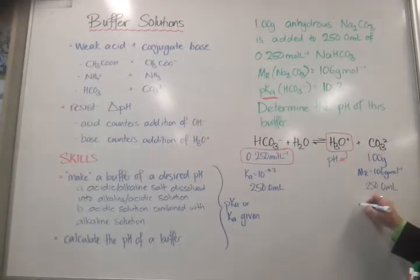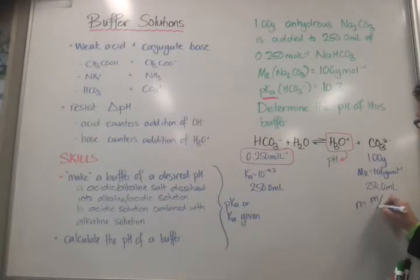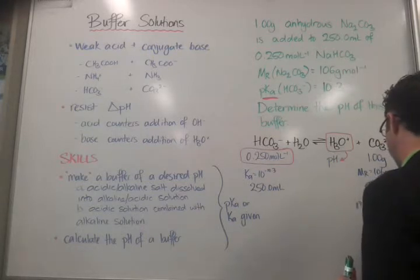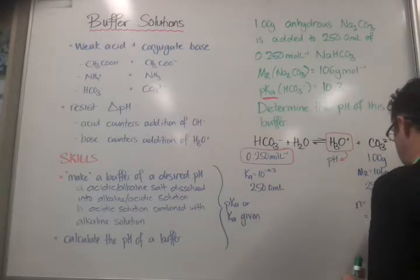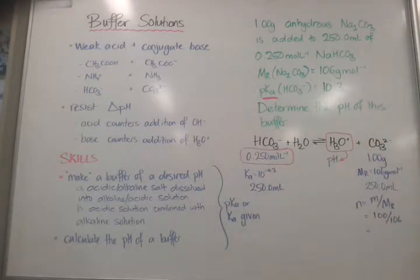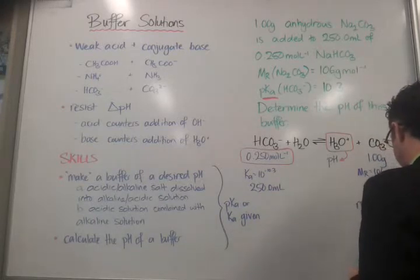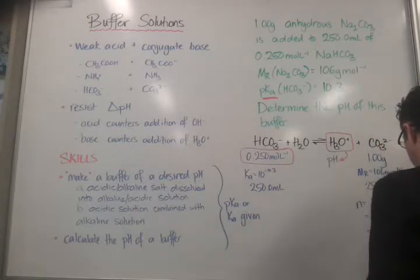From this one here, I can go n equals m over M. I've got an R if you can tell the difference. And I've got that 1 divided by 106. And everything's three significant figures. I'll do that. I'm going to get 9.43 times 10 to the negative 3 moles.